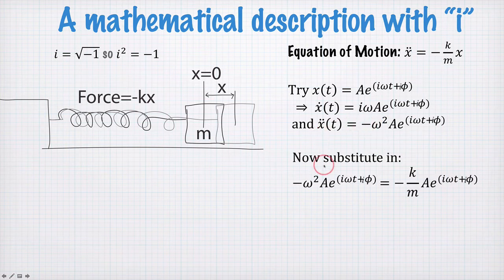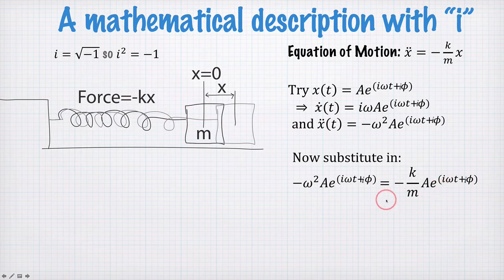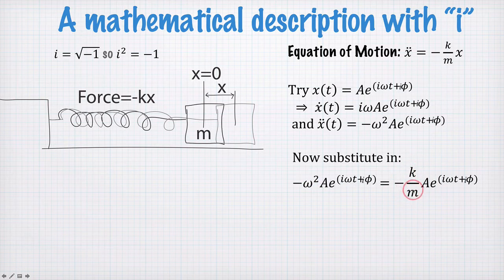So making this substitution, so here's x double dot and here's x over here, we see this equation is true provided omega squared is equal to k on m. That's the same condition we had before when we used the cosine function.